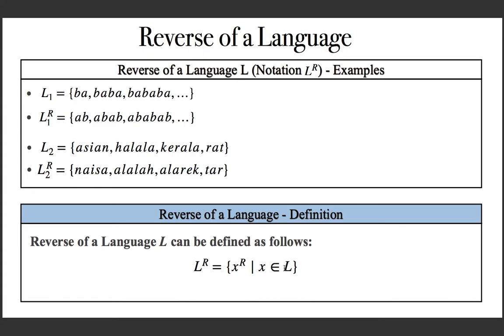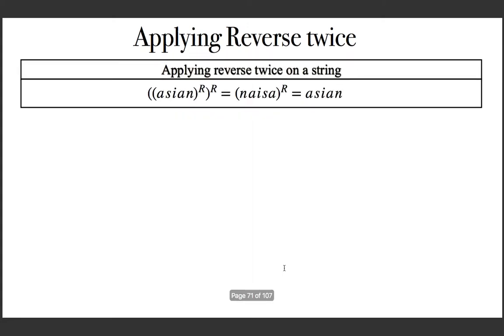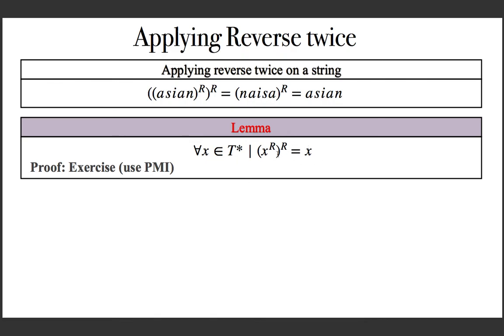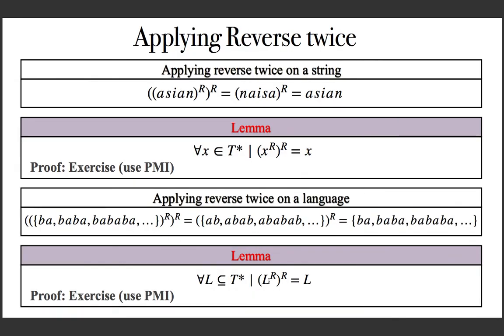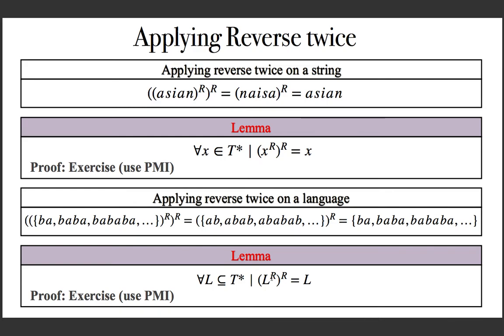If we apply reverse twice, we get back the original string — for example, reverse of reverse of 'Asian' is 'Asian'. This means reverse of reverse of a string is exactly that string, provable by mathematical induction, and the same holds for languages: applying reverse twice gives the same language. This is a lemma we need.